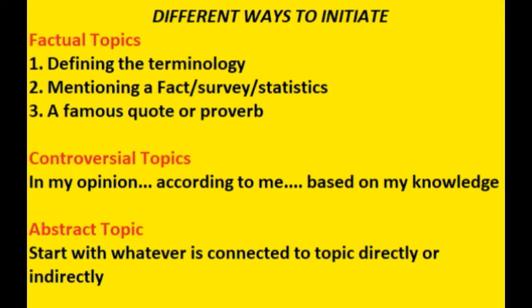There are different ways to initiate in GD based on the topic. If you get a factual topic, you can initiate in three ways: first, by defining the terminology in the topic (like the demonetization example); second, by mentioning a fact, survey, data, or statistics connected to the topic; and third, you can even initiate with the help of a famous quote or proverb. For a controversial topic, use sentences like 'according to me,' 'in my opinion,' or 'based on my experience.' For an abstract topic, start with whatever is connected to the topic directly or indirectly.